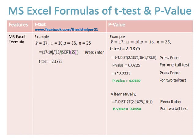17, then divide by 16, further divide by square root of 25. This gives t-test value of 2.1875. Now select T.DIST function in which you have to write t-test value which is 2.1875, press comma, then degree of freedom